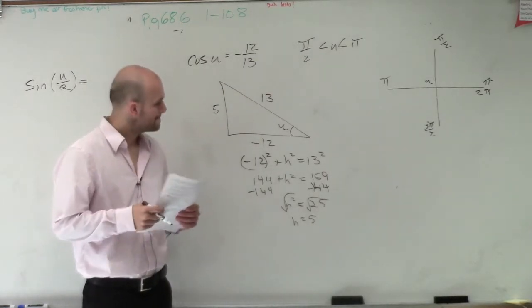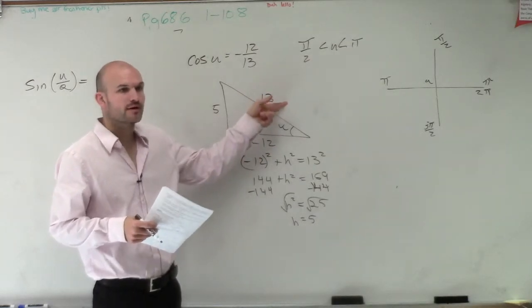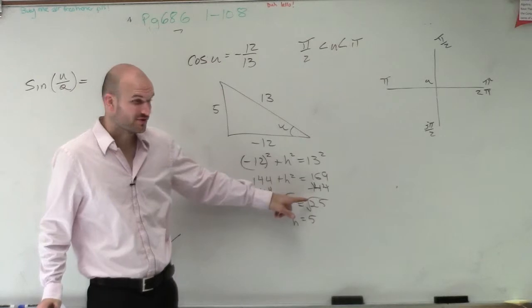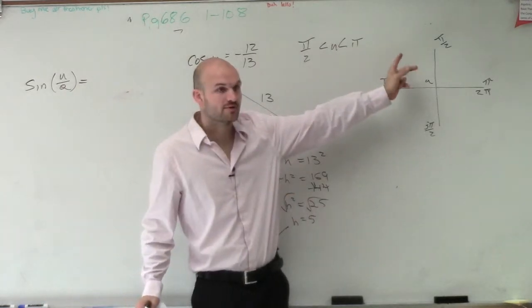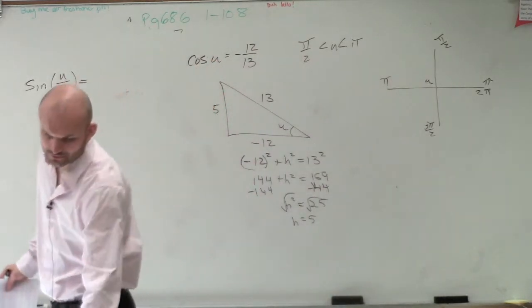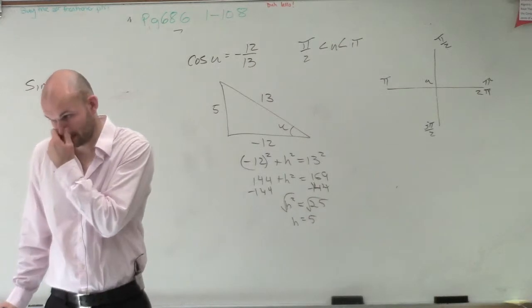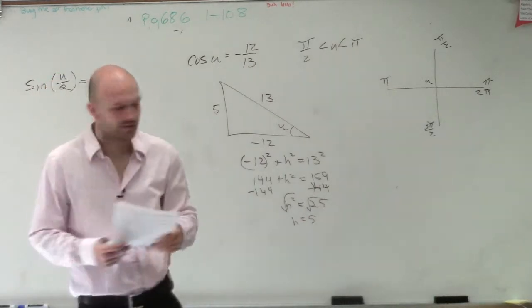Do you notice 12 squared plus 5 squared equals 13 squared? Now, remember, it says plus or minus, right? But since we're in the second quadrant, do we see why we're going to use the positive value for h? I'll go over it. I'll talk about it in a second.